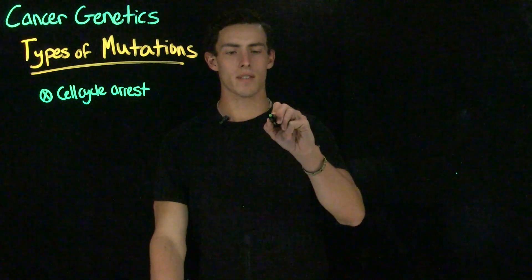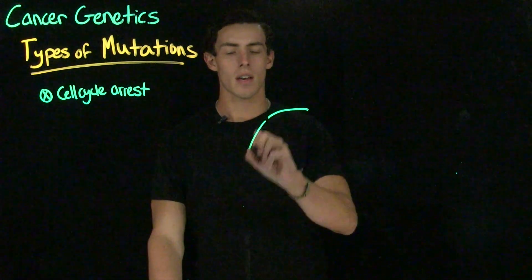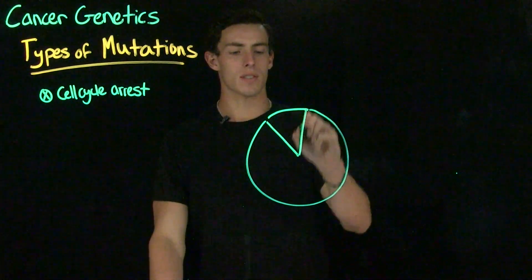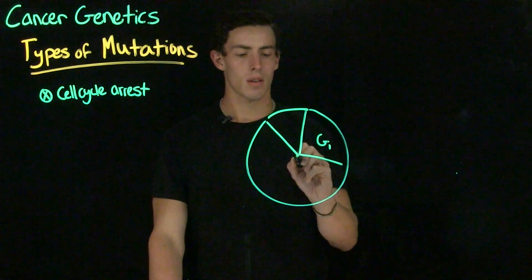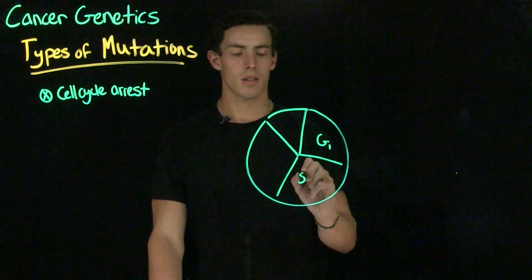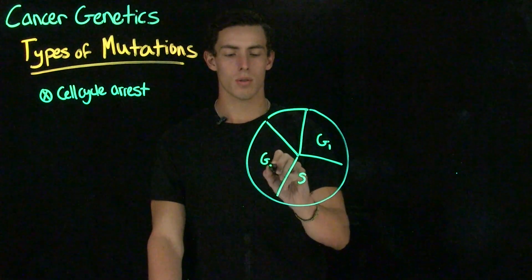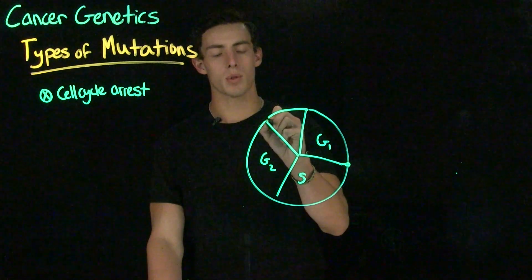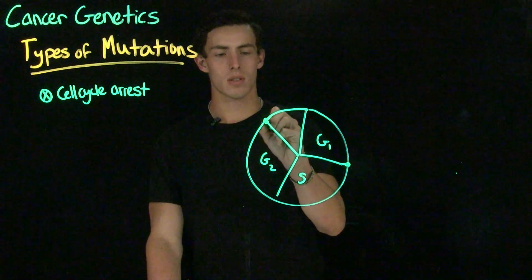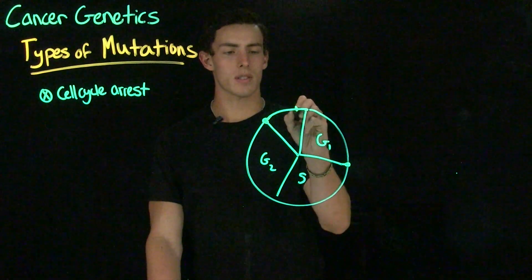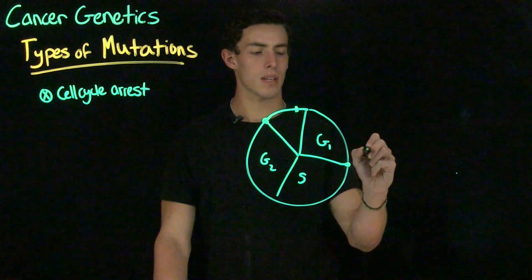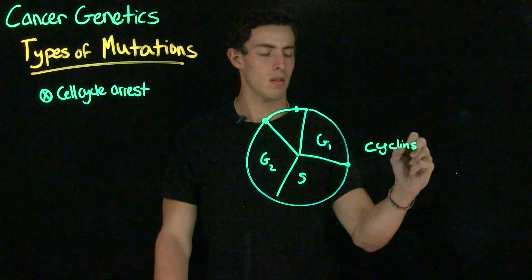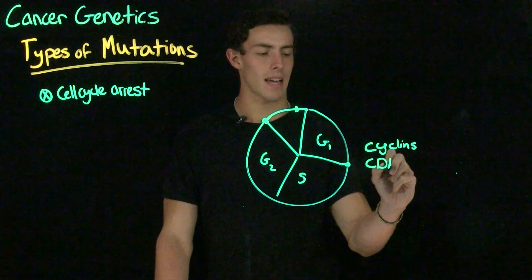Recall that the cell cycle has several phases — the mitotic phase as well as interphase. During interphase we have several different stages: G1, S, and G2. We have a checkpoint between G1 and S, a checkpoint between G2 and mitosis, and a spindle assembly checkpoint. All these checkpoints are dependent on proteins called cyclins and cyclin-dependent kinases, or CDKs.